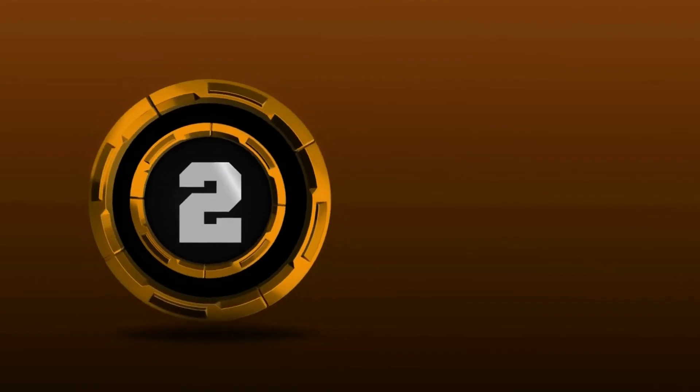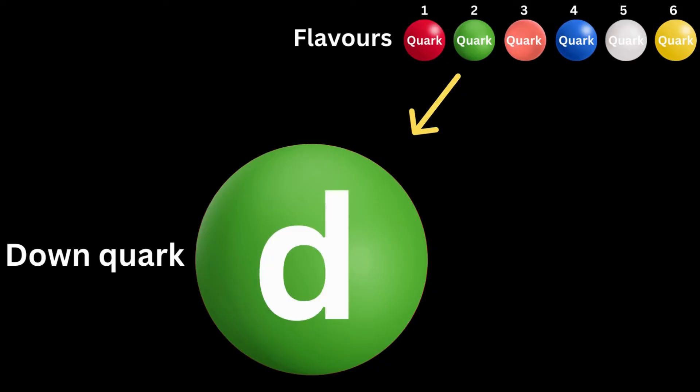Number two: the down quark, denoted as d. This is rather light and has a charge of minus one third.